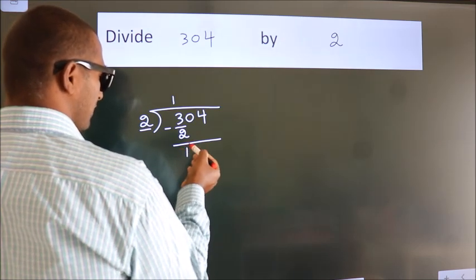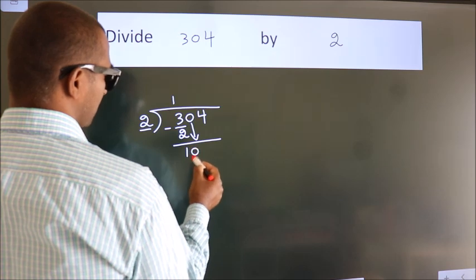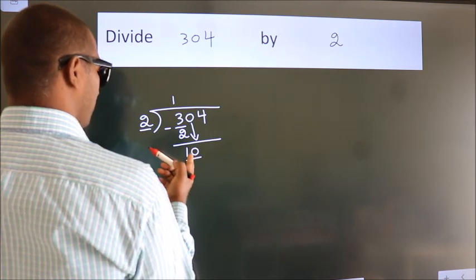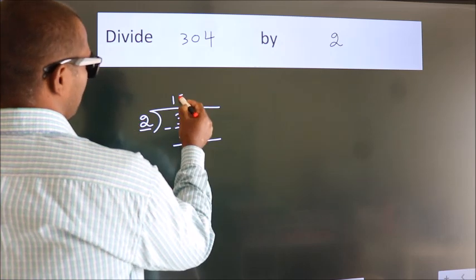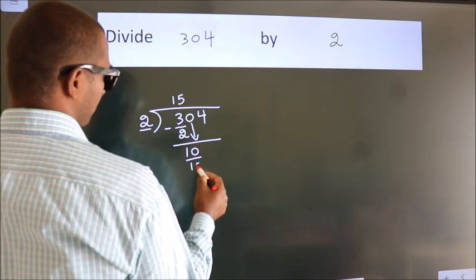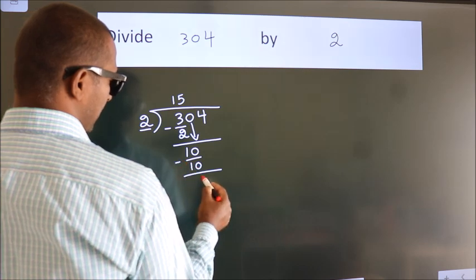After this, bring down the beside number. So 0 down. So 10. When do we get 10? In 2 table. 2 5s, 10. Now we subtract. We get 0.